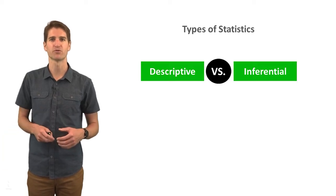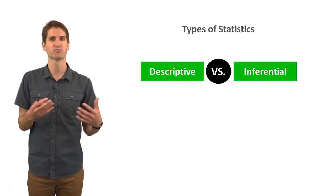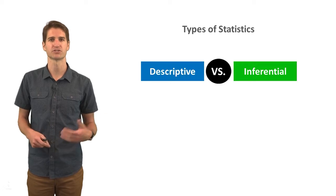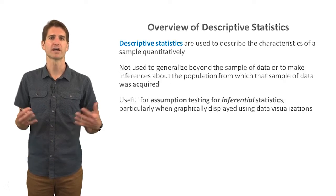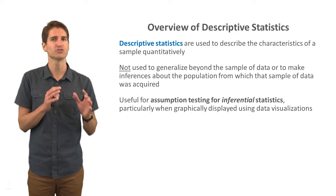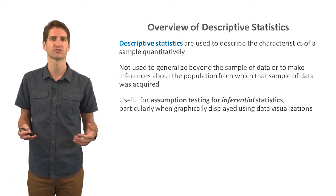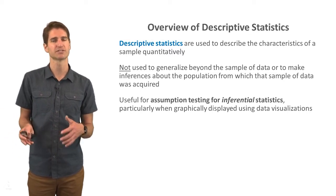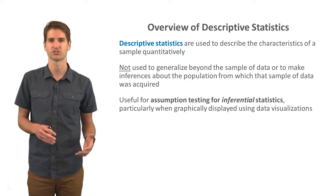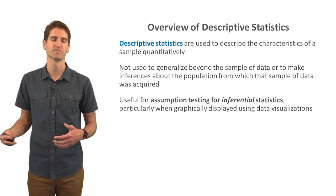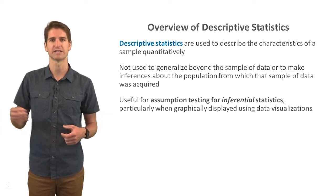In this lecture, we're going to focus on descriptive statistics. They're very useful for a number of different reasons, and they can also be used to inform our inferential statistics. Descriptive statistics are used to describe the characteristics of a sample quantitatively. They're not used to generalize beyond the sample of data or to make inferences about the population from which that sample of data was acquired. They're also useful for assumption testing for inferential statistics, such as assessing the extent to which a variable has a relatively normal distribution if you're using parametric inferential statistics, or the extent to which there might be certain extreme values or outliers — using a box plot, perhaps, you could identify that.